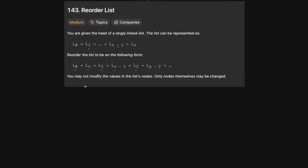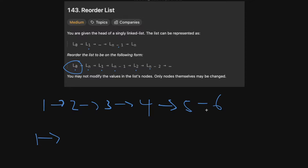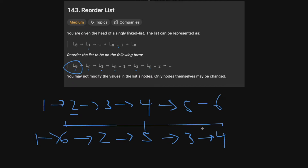Let's look at a basic example with the linked list 1, 2, 3, 4, 5, 6. We always take the first element — 1 — then the last — 6 — then the next from the front — 2 — then from the back — 5 — then 3, then 4. Notice how 6, 5, and 4 is just the back half of the list reversed. This is the crux of the problem.